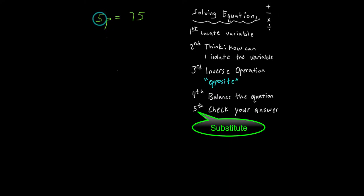The inverse of multiplication is division. So I'm going to divide this side by five. Step four is to balance the equation. So whatever I do to this side, I've got to do to the other side of the equation. So I'm going to divide by five.